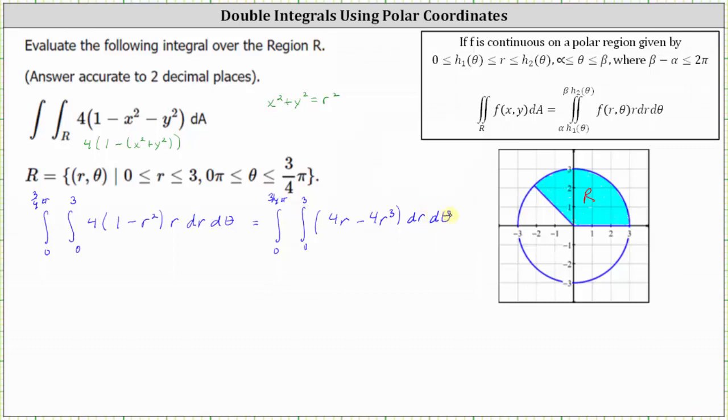And now we integrate this with respect to R. Integrating four r with respect to R, we have four times r squared divided by two, or two r squared, minus integrating four r cubed with respect to R. We have four times r to the 4th divided by four, or just r to the 4th.